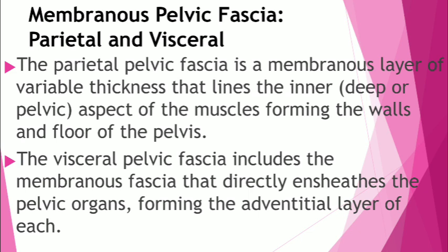Now let me talk about the visceral pelvic fascia. The visceral pelvic fascia includes the membranous fascia that directly ensheaths the pelvic organs. It forms the adventitial layer of each. The parietal and visceral layers are actually continuous where the organs penetrate the pelvic floor. At that area, you have the parietal fascia thickening and forming the tendinous arc of the pelvic fascia, which is a continuous bilateral band that runs from the pubis to the sacrum along the pelvic floor adjacent to the viscera.